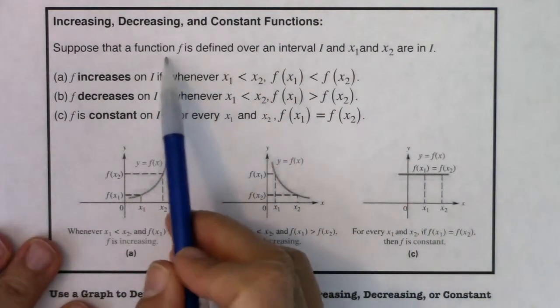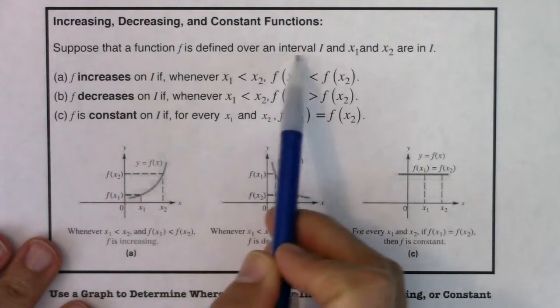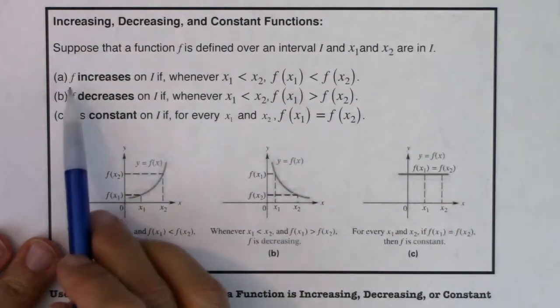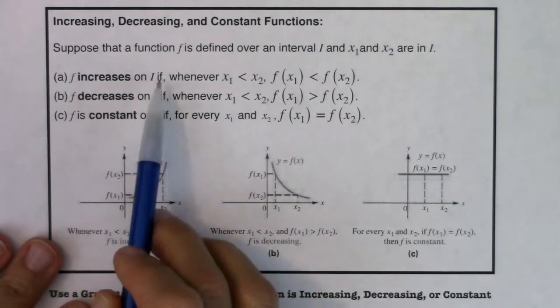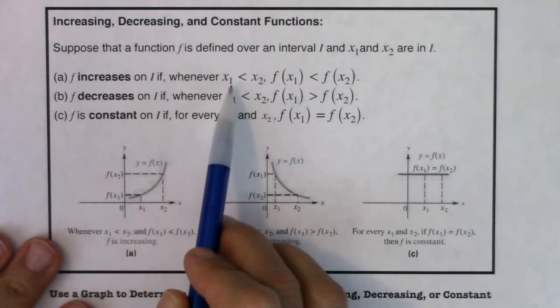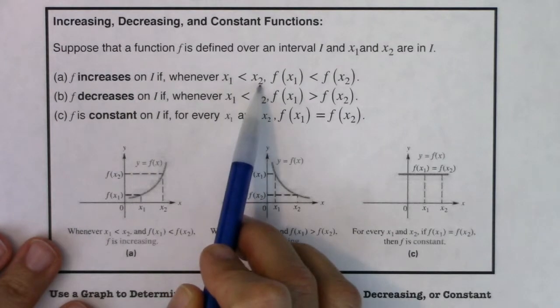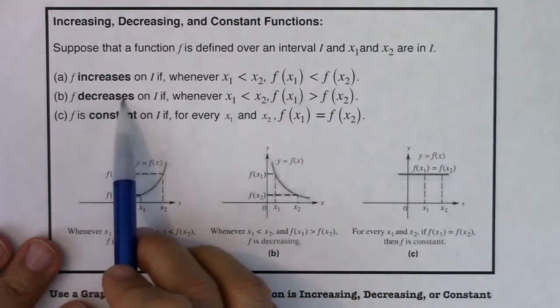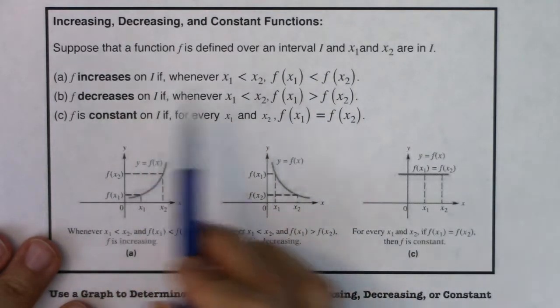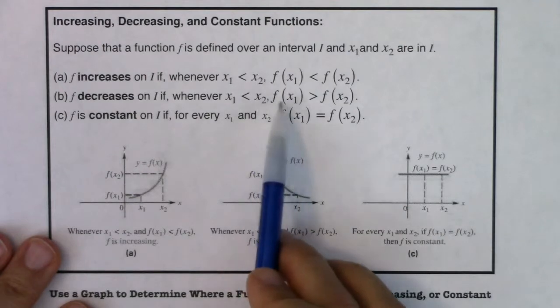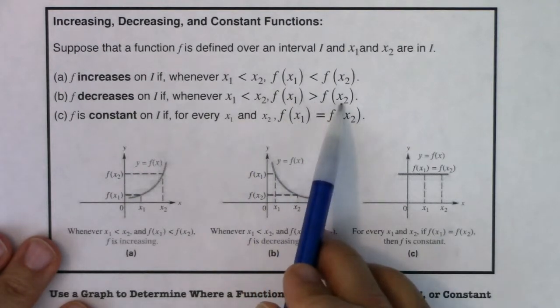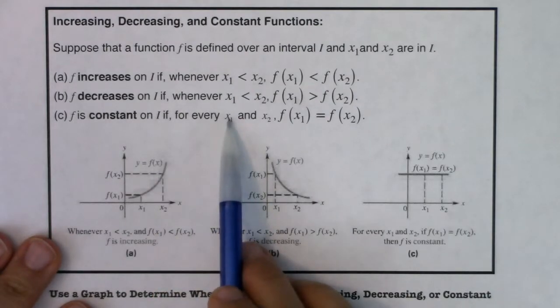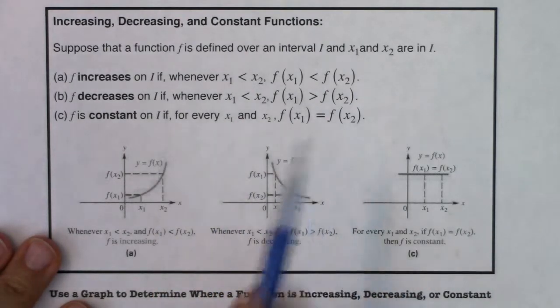So here we go. Suppose that a function f is defined over an interval I, and x sub 1 and x sub 2 are in this interval. We will say that f increases on this interval if, whenever x sub 1 is less than x sub 2, we know that f of x sub 1 is less than f of x sub 2. We're going to say it decreases on this interval whenever x sub 1 being less than x sub 2 lets you know that f of x sub 1 is greater than f of x sub 2. And it's constant wherever we have x sub 1 and x sub 2 with their function values being equal.